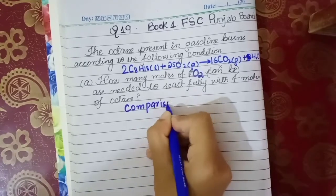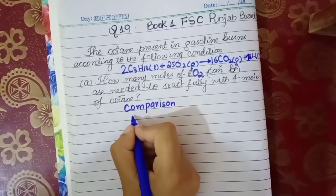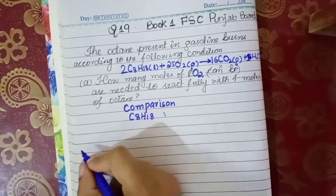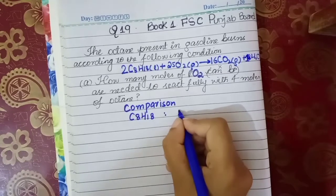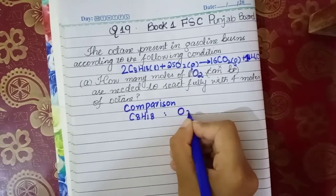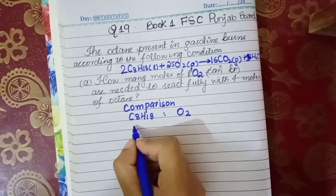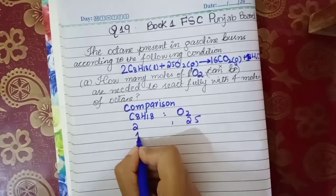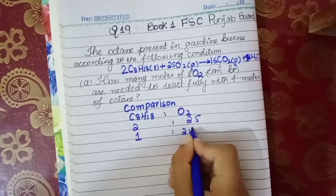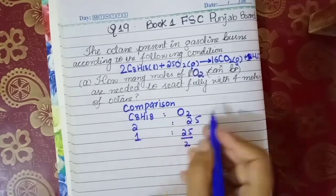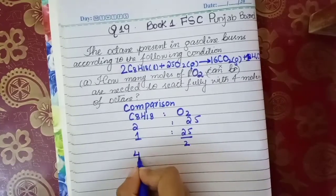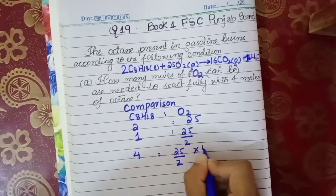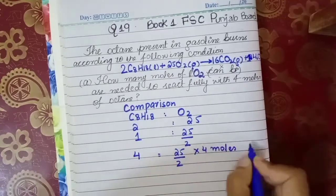C₈H₁₈ is 2 moles and O₂ is 25 moles, so we write it as 2:25. From this, one mole of C₈H₁₈ needs 25/2 moles of O₂, and four moles of octane needs 25/2 multiplied by 4 moles of O₂.